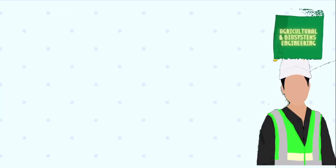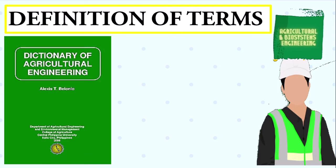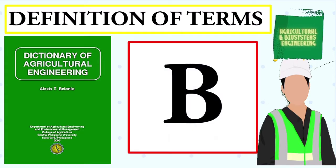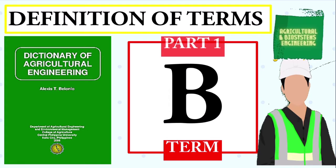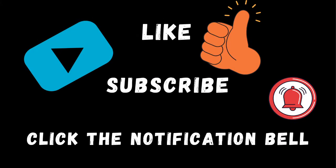Welcome to my channel. This time, we will be having a definition of terms related to agricultural engineering. The list of terms came from Dr. Alexis Belonio's Dictionary of Agricultural Engineering. The terms I will be showing to you will be part one of the words that start from letter B. I will be reading the terms twice before I will reveal the terms being defined. Don't forget to like, subscribe, and click the notification bell.